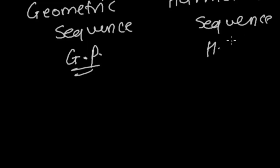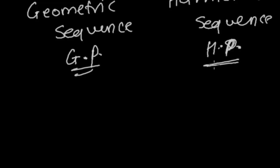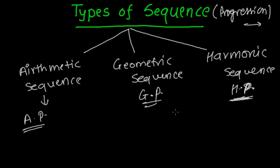Generally, school students tend to refer to these as progressions rather than sequences. So from now on we'll also be using the term progression. You can also say sequence or series — if there is a plus sign it will be a series, and if there is only a comma then it will be a sequence, as we have already learned.